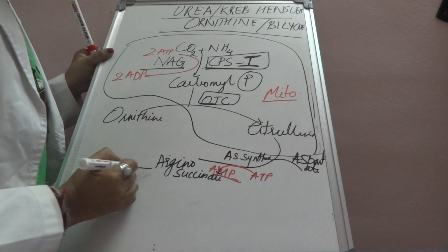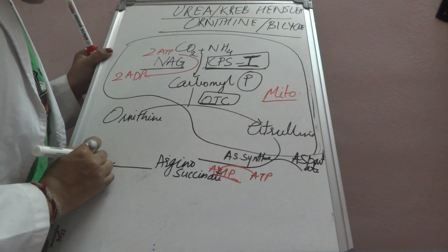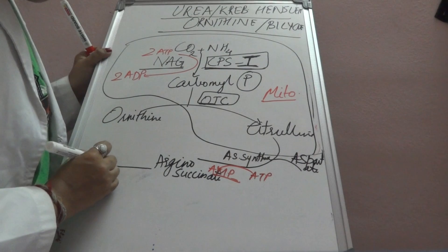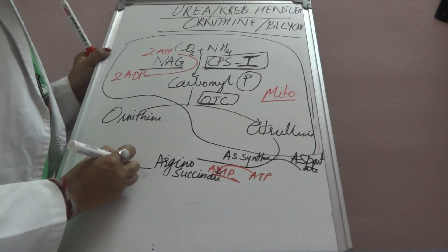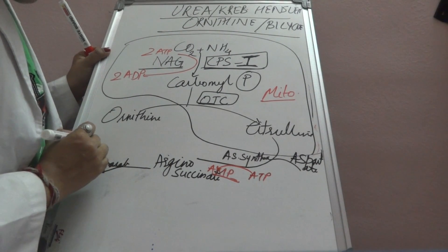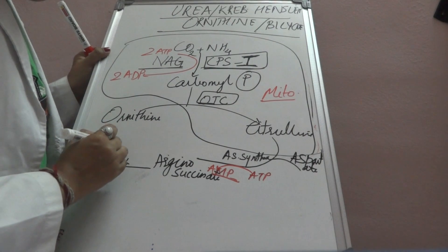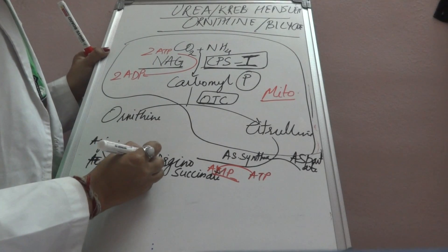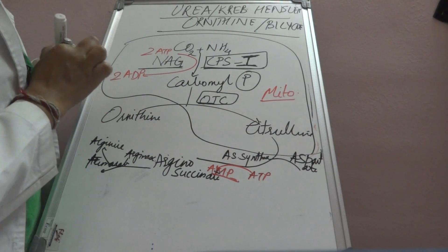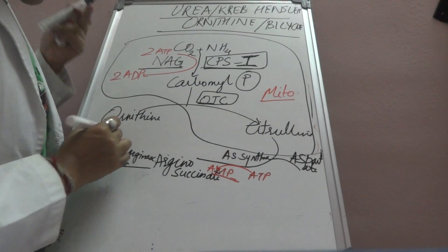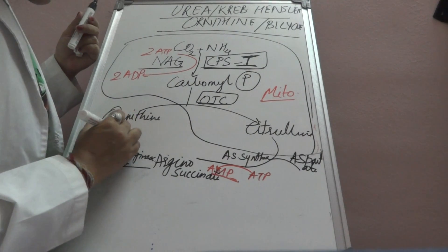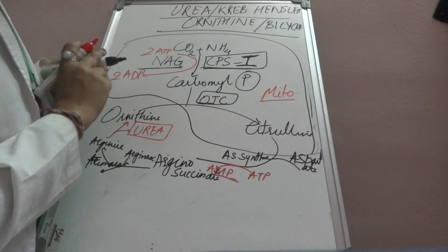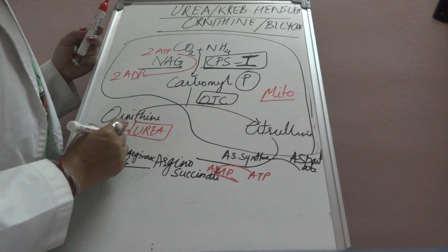This argininosuccinate will form fumarate and arginine. The arginine will finally form ornithine and urea in the presence of the enzyme arginase.